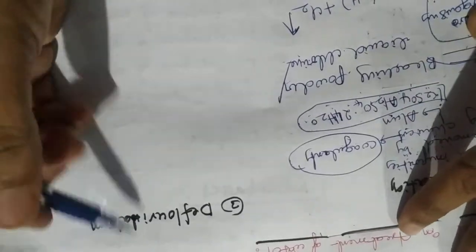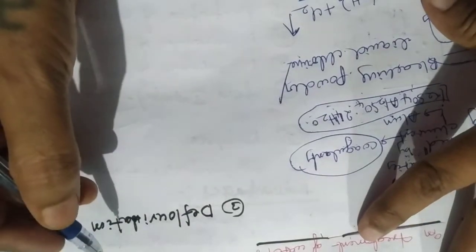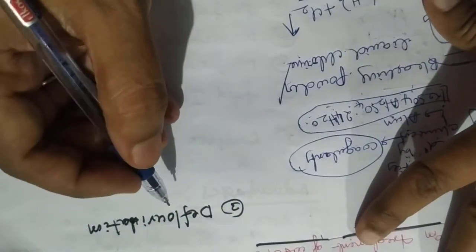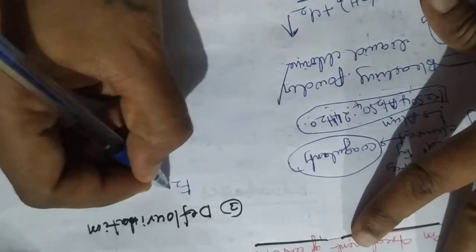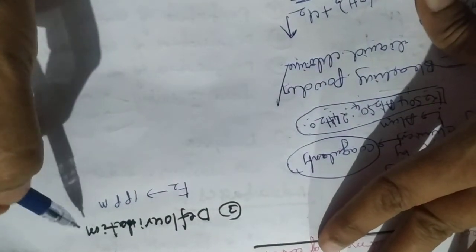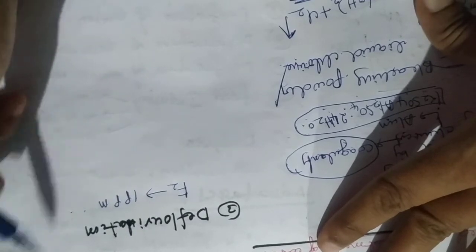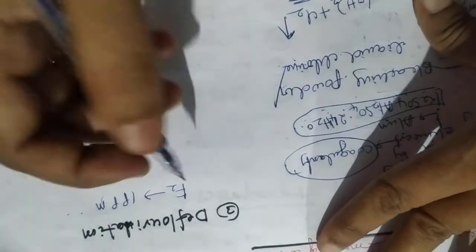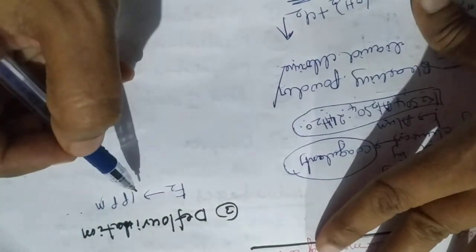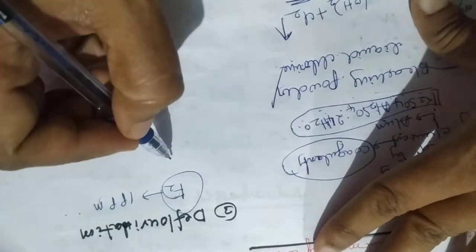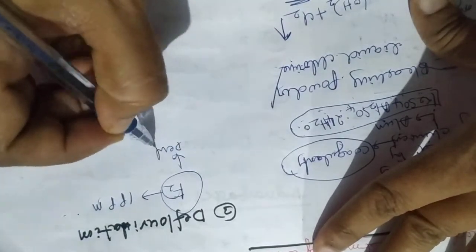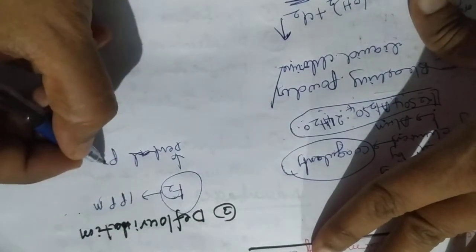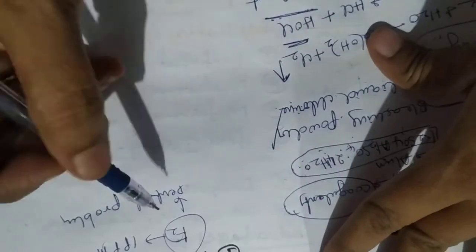The next technique is defluoridation. Fluorides up to 1 ppm, or 1 mg per litre, in drinking water are required for normal growth of teeth. Excess fluorine in water causes skeletal and dental problems, a condition known as fluorosis.